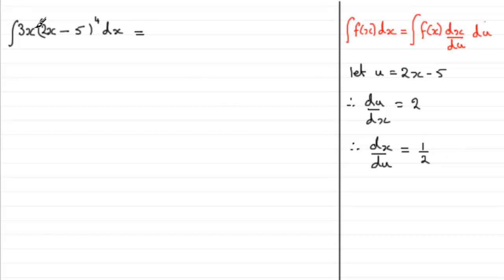So the integral here then becomes the integral of 3x multiplied by essentially u to the power 4. And then instead of dx, we now have dx by du, which is this half, and then we insert the du. Now, the problem is we've still got an x in the integral, and we've got to integrate with respect to u, so we expect all u's in this.